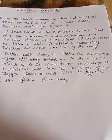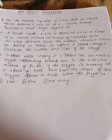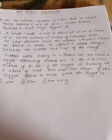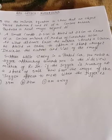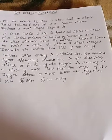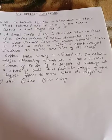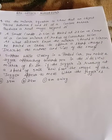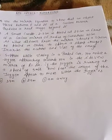The next question: suppose while sitting in a parked car, you notice a jogger approaching towards you in the side view mirror. The radius of curvature R equals 2 meter, so the focal length is 1 meter. The jogger is running at a speed of 5 meter per second.